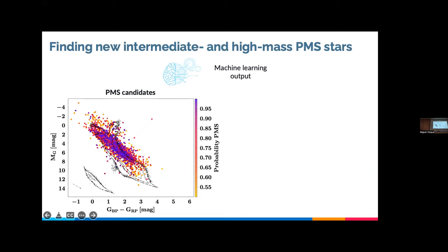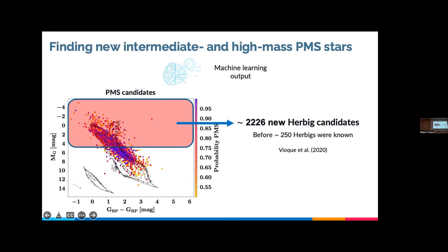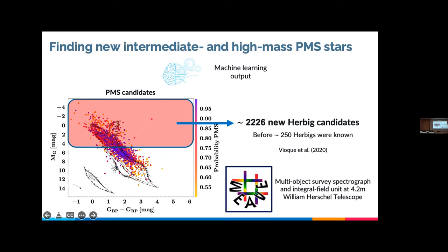The result was a large sample of pre-main sequence candidates, shown here in a color-magnitude diagram. From this sample we were able to select around 2,200 new Herbig stars. Before, we knew 250 objects of this class — this is an order of magnitude increment in the number of known intermediate to high mass forming stars. All these 2,200 Herbig stars will be observed with WEAVE, a new multi-object spectrograph recently placed at the 4-meter William Herschel Telescope in La Palma. First light was delayed first by the pandemic and then by the volcano, so hopefully no more apocalyptic events.